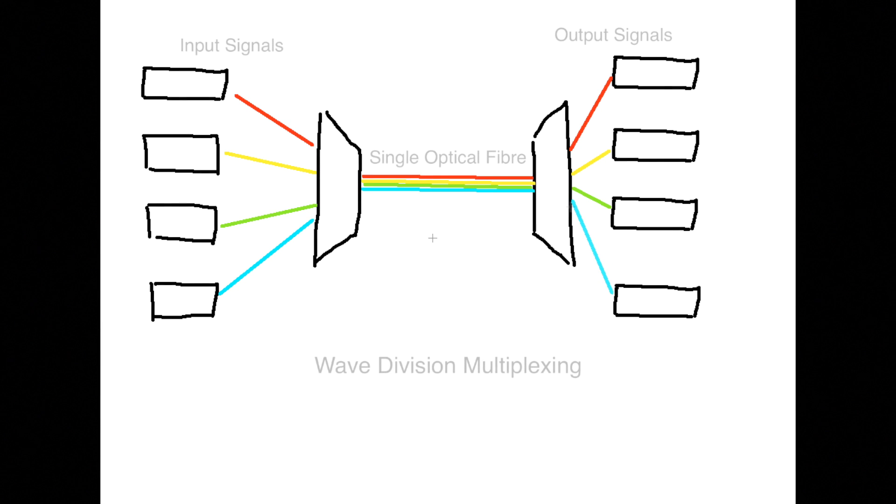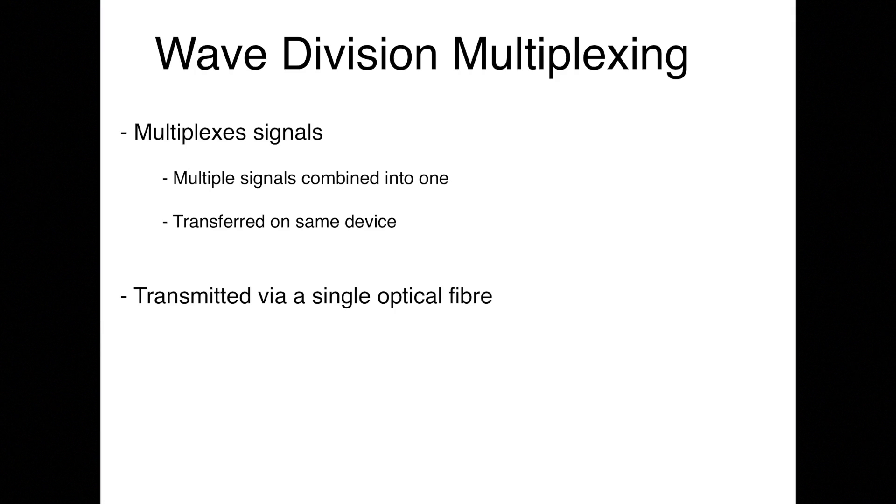Wave division multiplexing or WDM is a technology that is used in fiber optics which multiplexes signals in order to transmit them via a single optical fiber. The term multiplexing simply means that multiple signals are combined together into one so that they can be transferred using the same device.